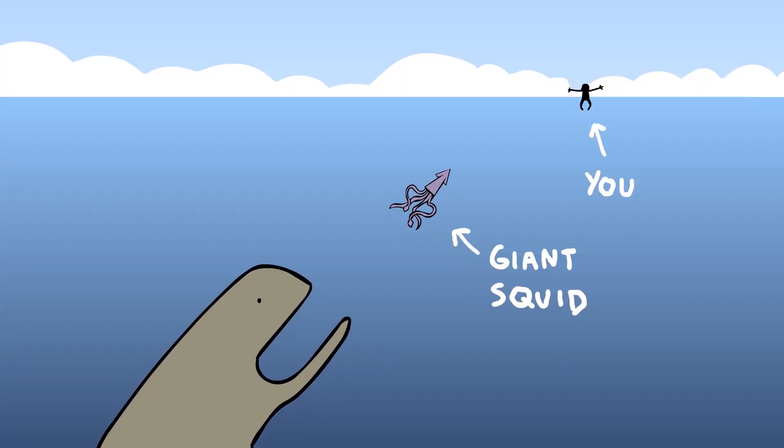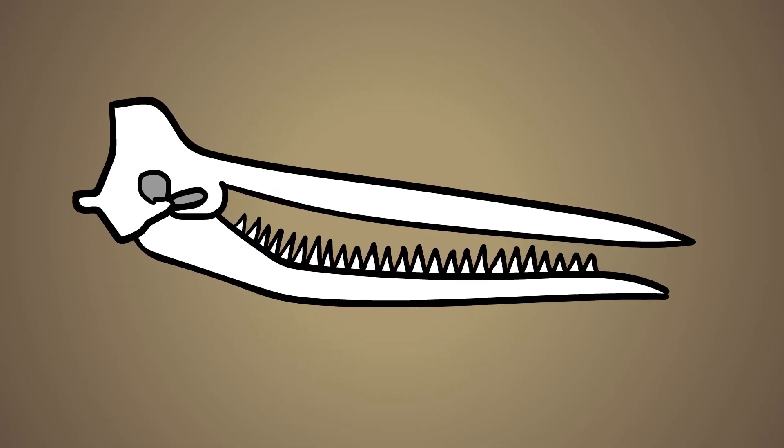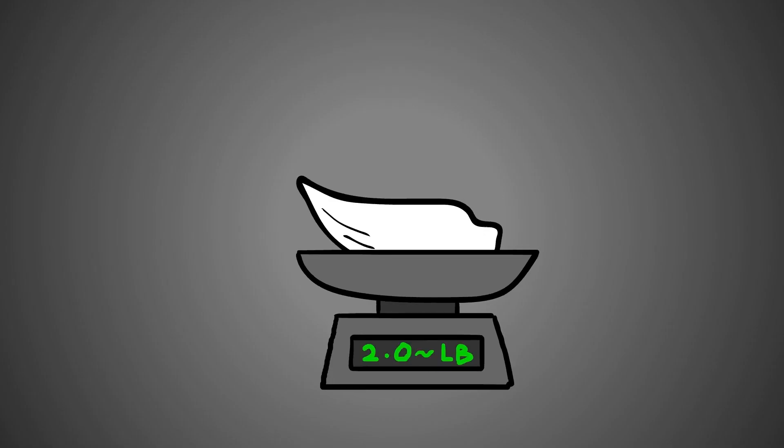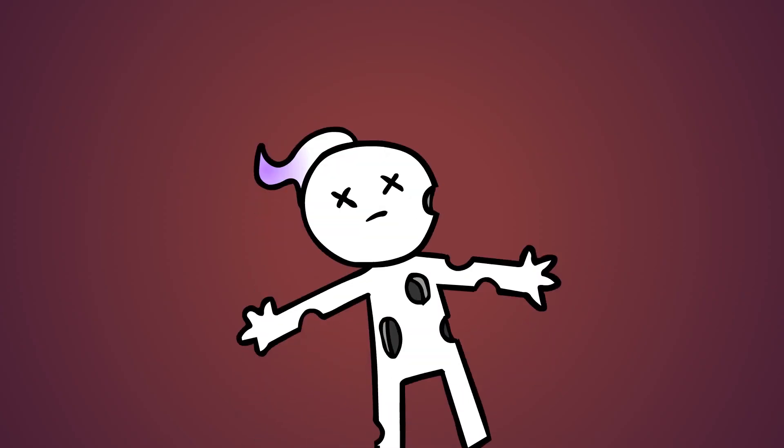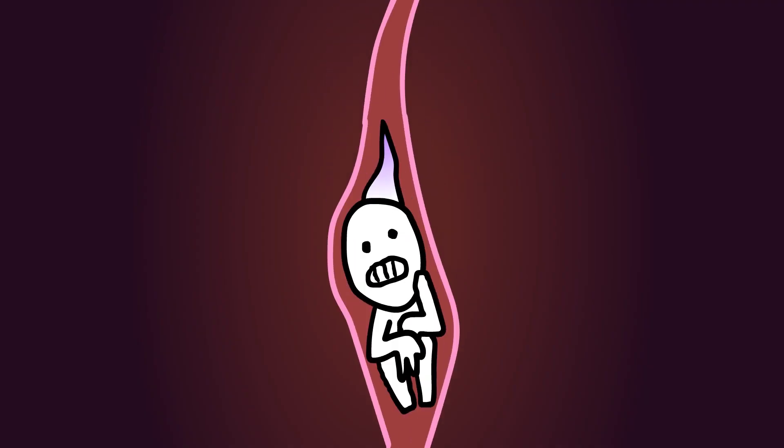Sperm whales are known to swallow giant squids whole, so a sperm whale could easily swallow you. But the first obstacle would be its 26 knife-like sets of teeth that are about 15 to 20 centimeters long and weigh around 2 pounds each. Realistically, you'd likely get bruised and punctured by their teeth before making it down a very tight esophagus.